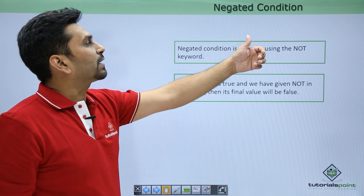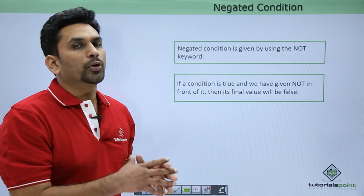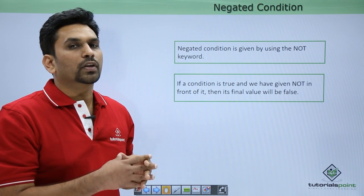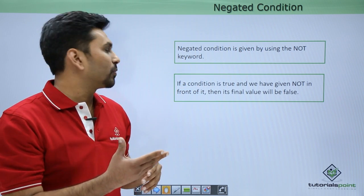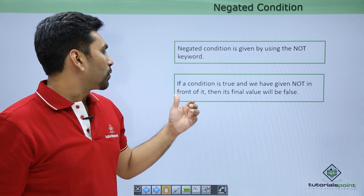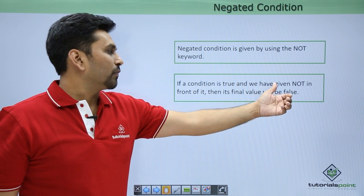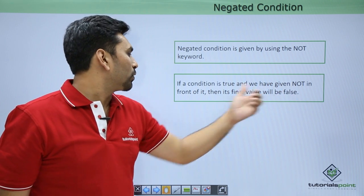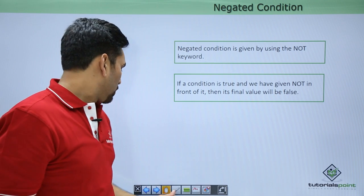Negative condition is like putting NOT in front of a condition — the reverse becomes true. If a condition is true and we place NOT in front of it, the final value will be false.